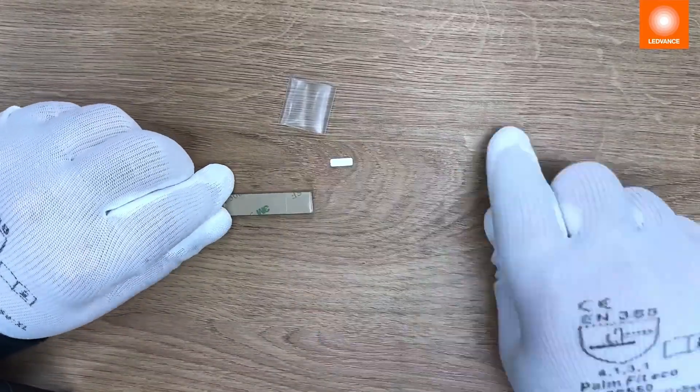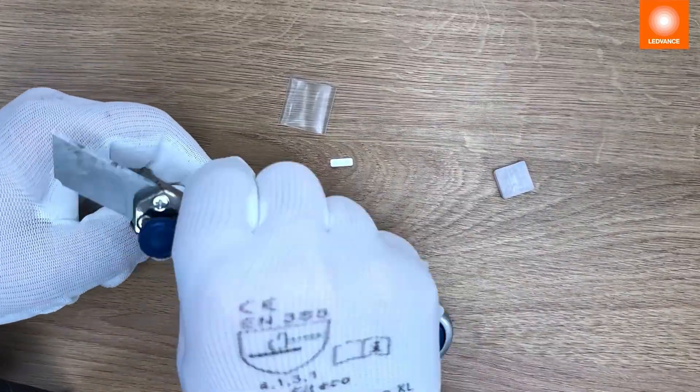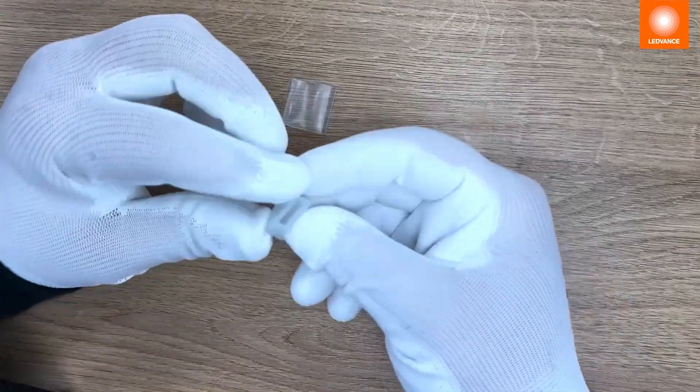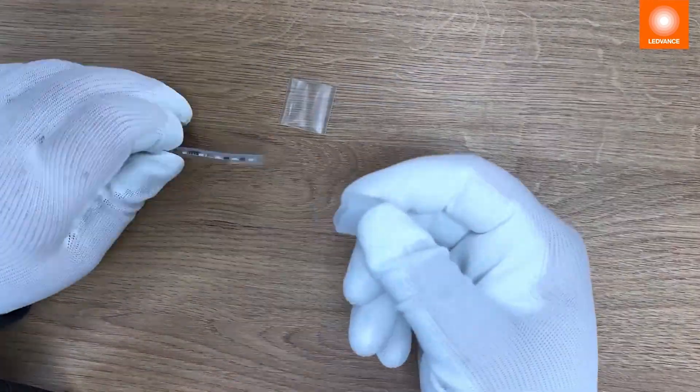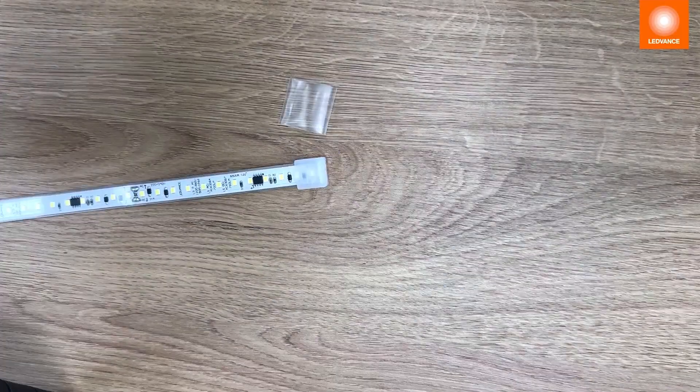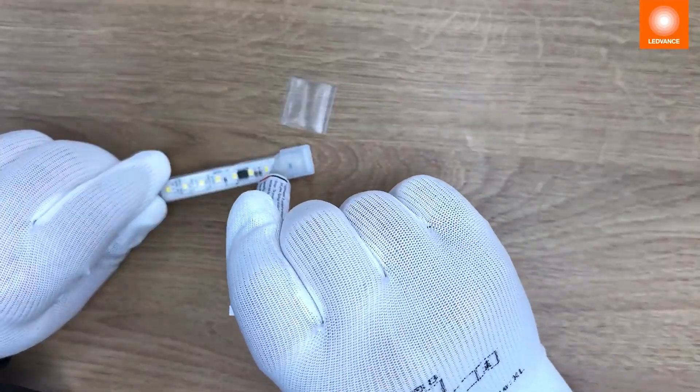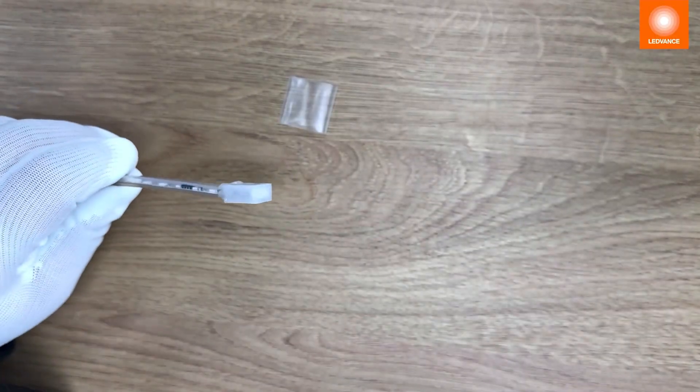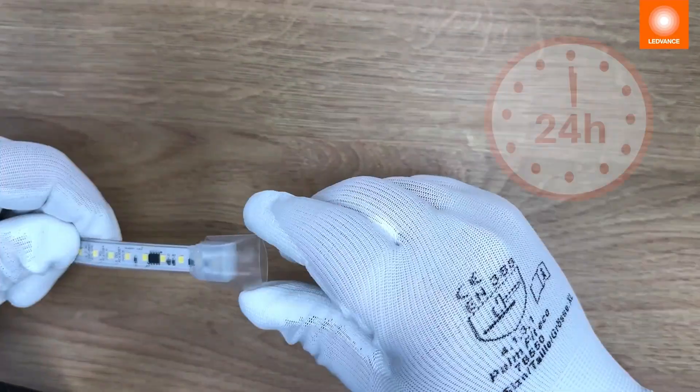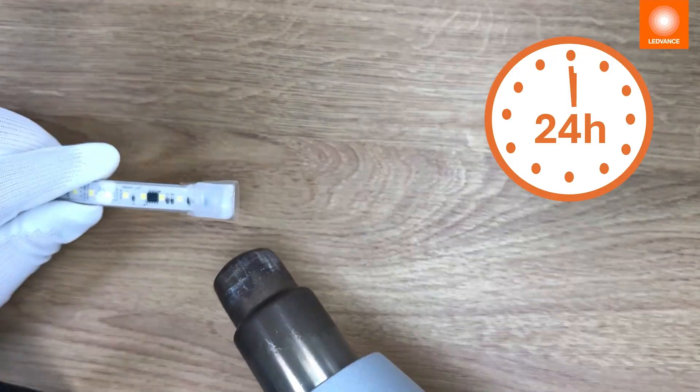To mount the end cap, first remove the adhesive tape on the back. After putting the end cap over the strip, seal the small gaps around the strip with silicone glue. Attach the shrinking foil and let it dry for 24 hours.